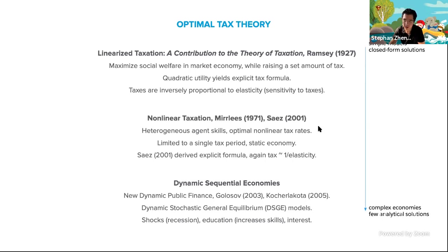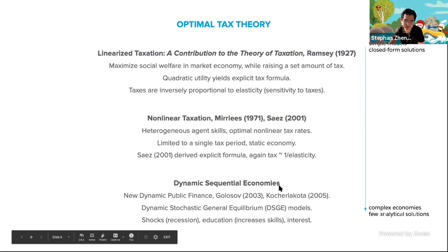In particular, the assumption in nonlinear taxation is that people have different skills — people make different amounts of money per hour depending on the quality and difficulty of the job. What they showed is that you can derive optimal nonlinear tax formulas. Again, the property of these formulas is that they are proportional to the inverse of this elasticity. The limitation though is that they typically limit themselves to a single tax period — it's like a bandit setting — and the economy is quite static, at a natural equilibrium.